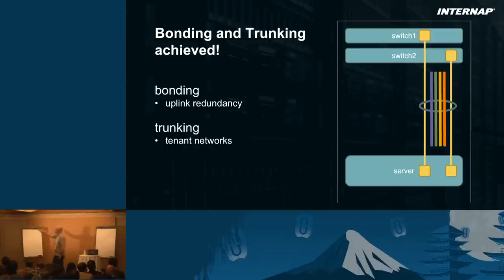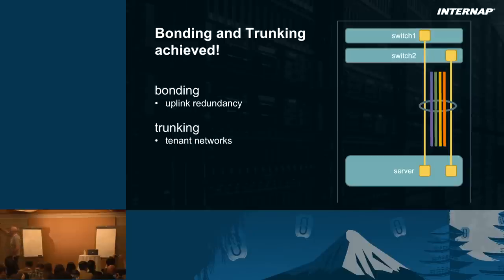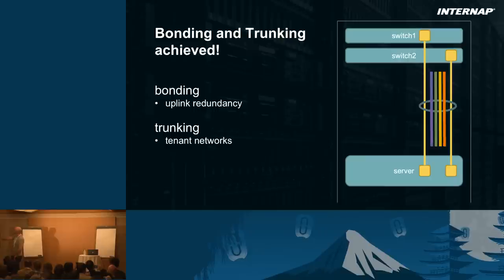We see the two switches at the top of the rack. A server is connected to the two different switches. If we need to shut down one switch for a firmware upgrade, it doesn't impact the customer. If either switch loses its uplink to the router, it doesn't impact the customer. That was very important.